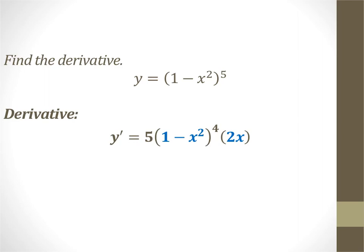This is a simple embedded function, so you have an inner and an outer. We're going to bring the 5 down, so you get 5, keep what's inside, subtract 1 from the exponent, and then chain rule out the derivative of the inside. And that should be a negative — negative 2x.